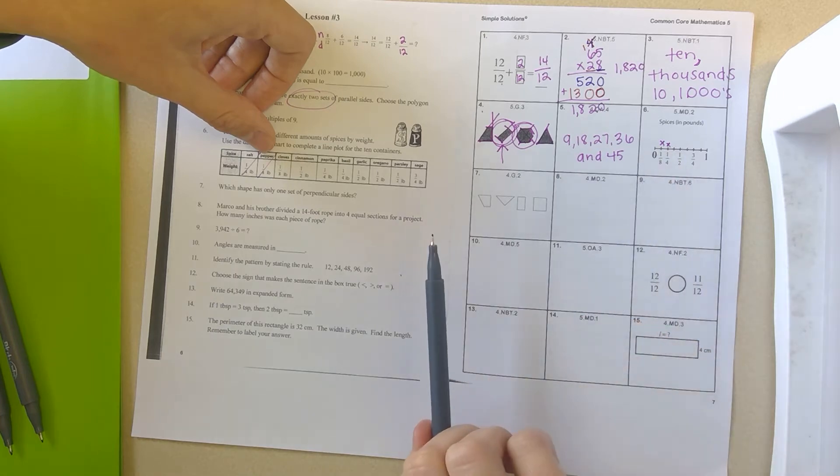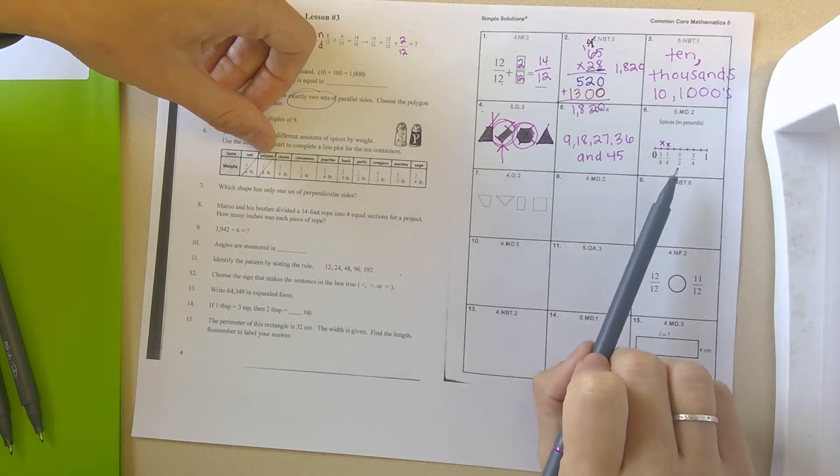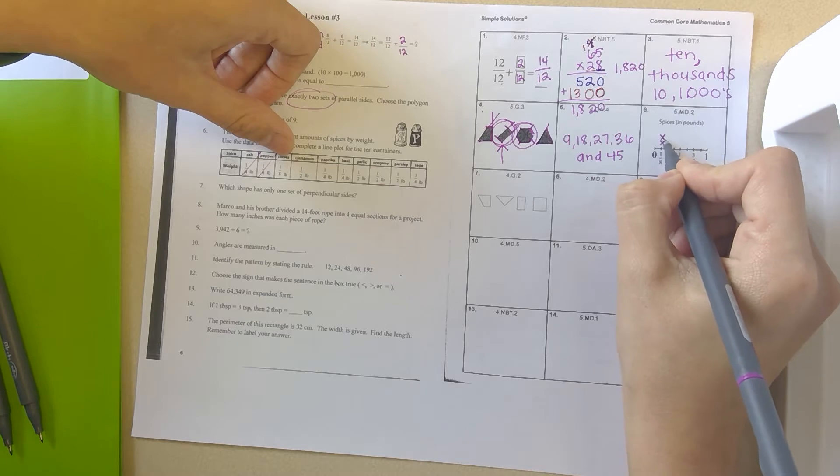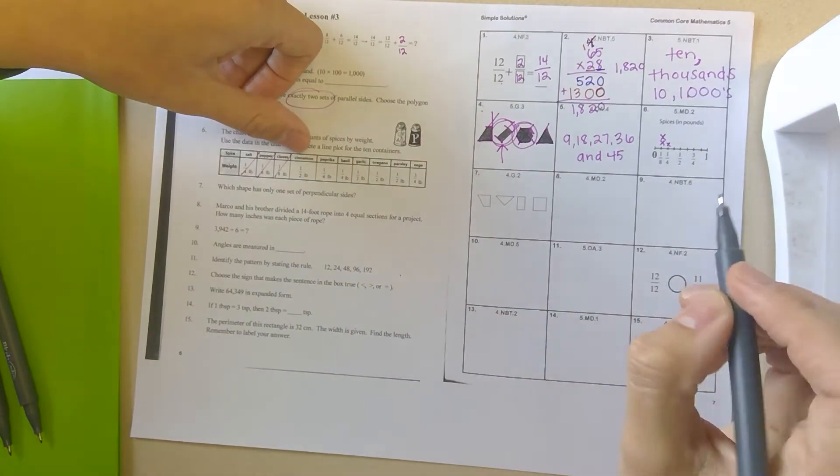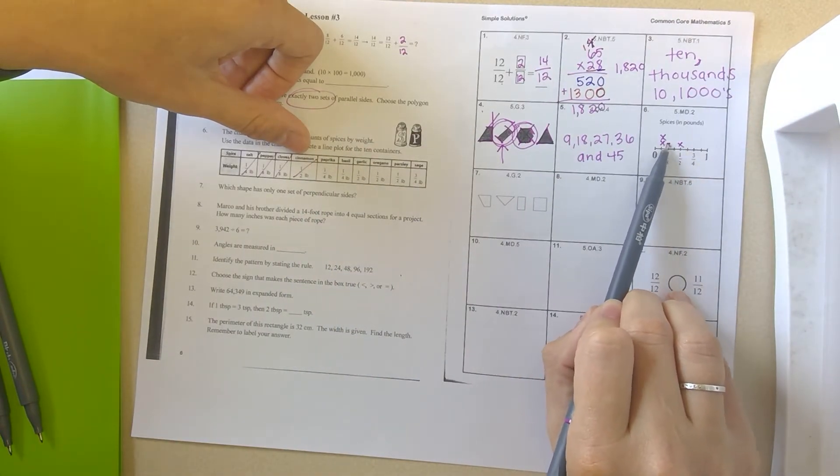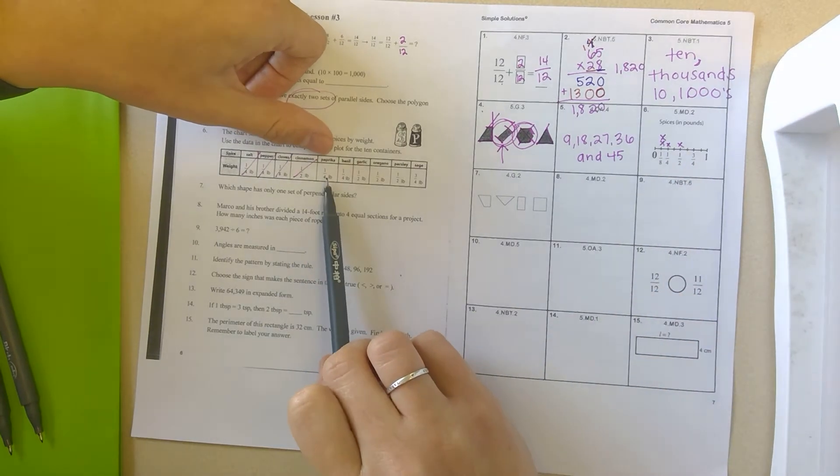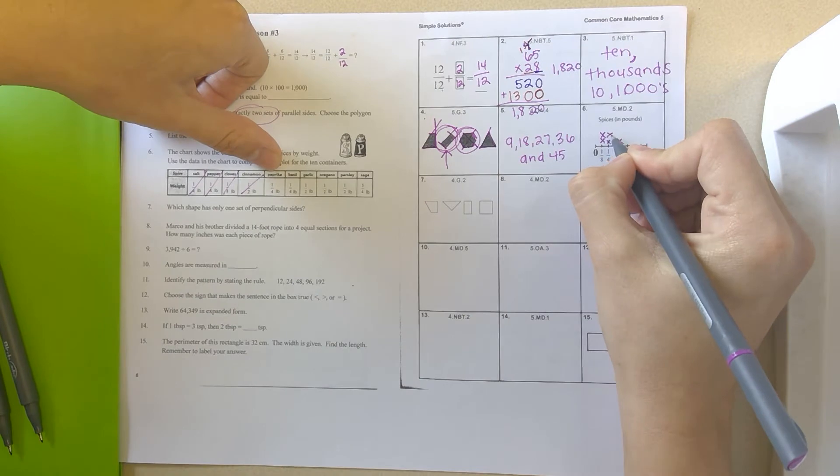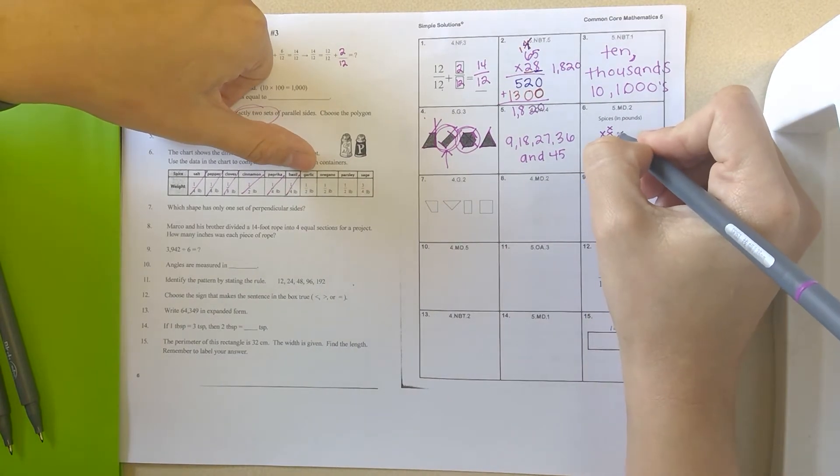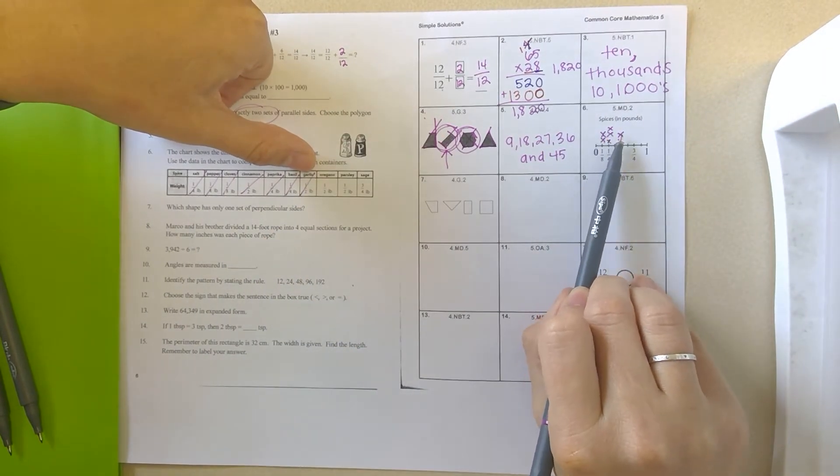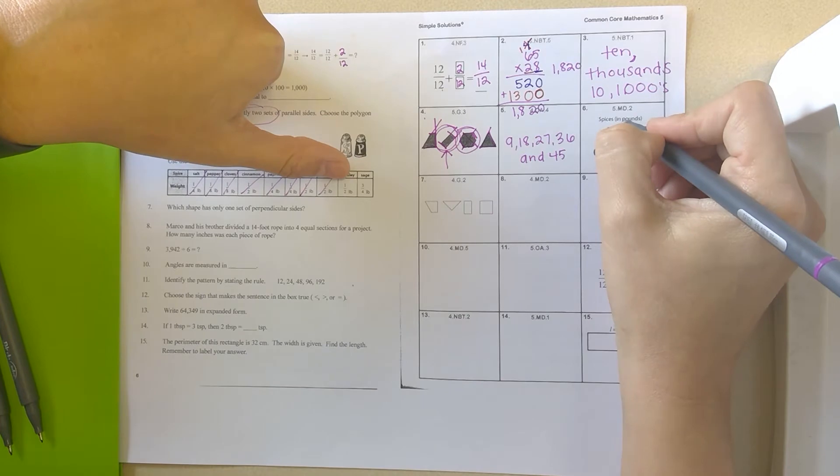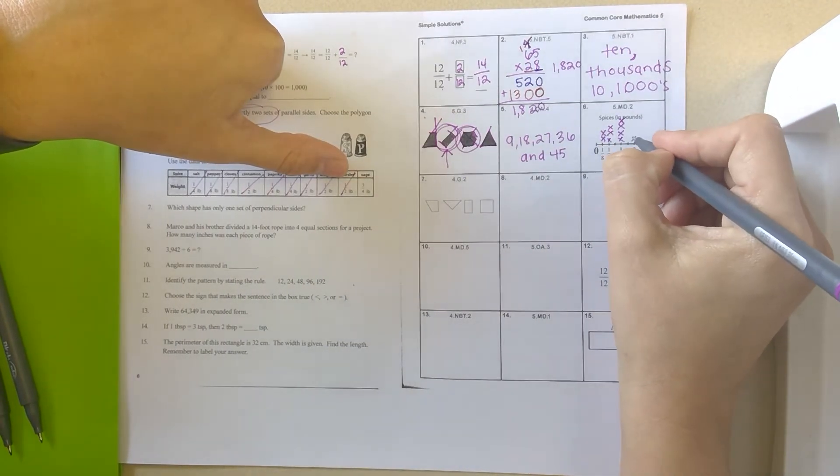So salt is one fourth a pound. So I will put an X above one fourth, and I'm marking through that. Pepper is one eighth. Put an X above one eighth. Mark it out. Now when you are doing line plots, you need to try to make sure that your X's are the same size and organized. So I'm trying to line these two up. Now cloves is one eighth, so there's another one. So you put, if you have more than one, you put them right on top another. Cinnamon is at one half. Now notice all my first X's I'm trying to keep in the same row, so it's easily noticeable how many there are. Paprika is one fourth. There's a second one, so I'm going to put it above it. Mark it out. Basil, also one fourth. Mark it out. Garlic, one half. So notice all my second X's are lined up. Oregano, one half. Mark it out. Parsley, one half. Mark it out. Sage, three fourths. Mark it out.